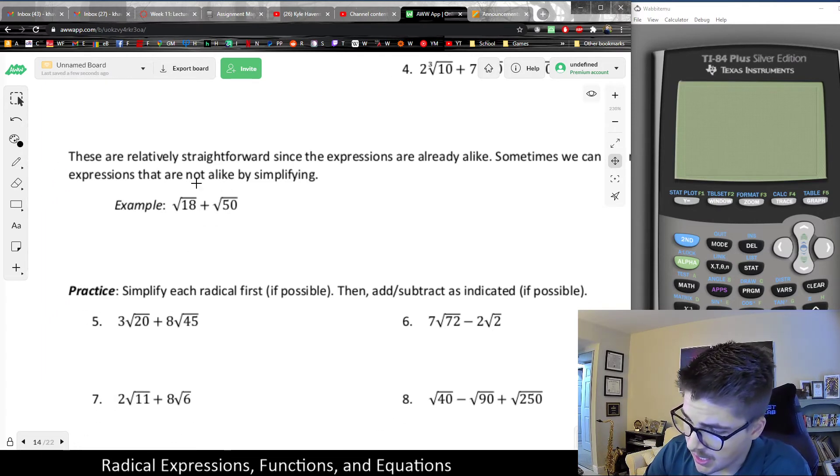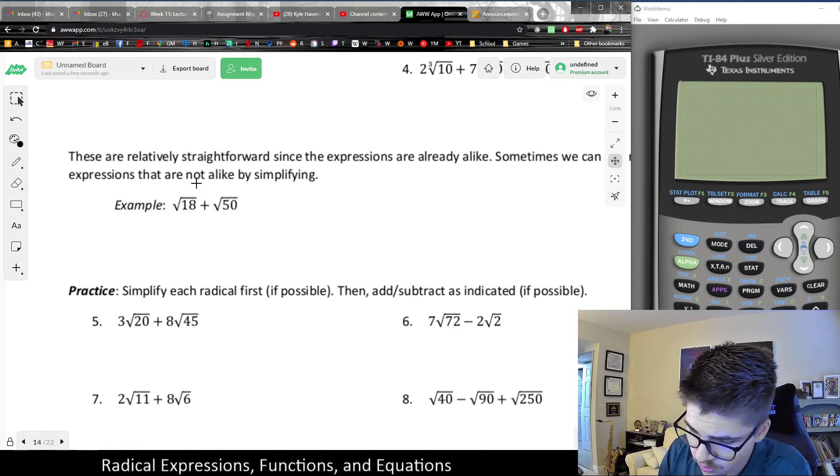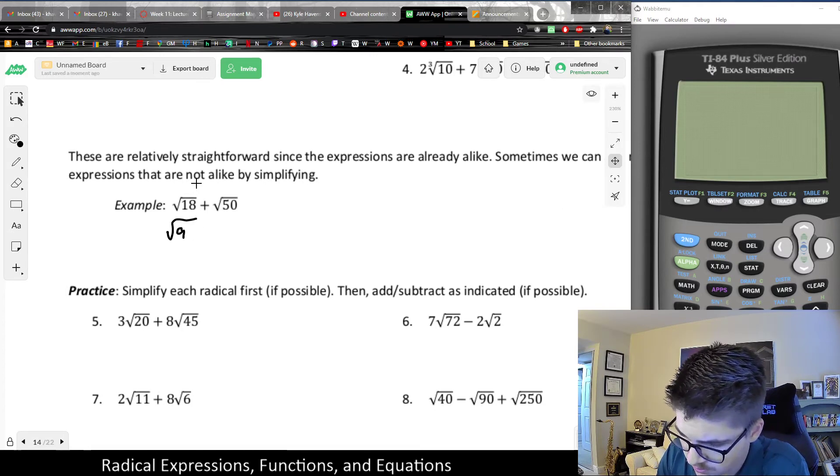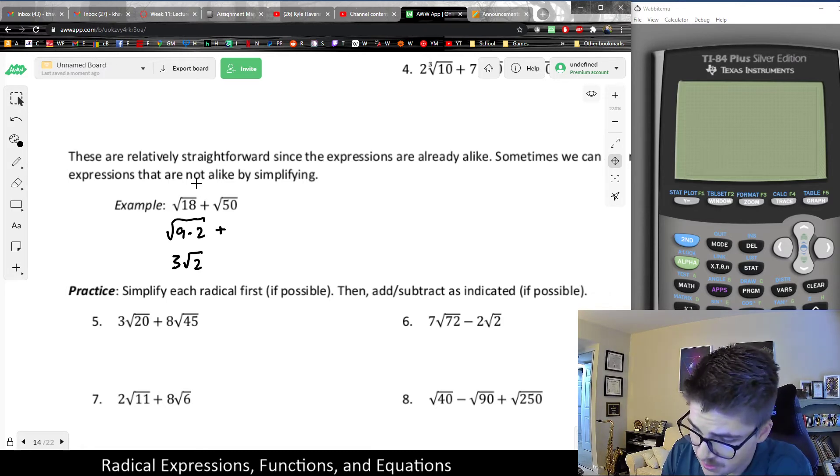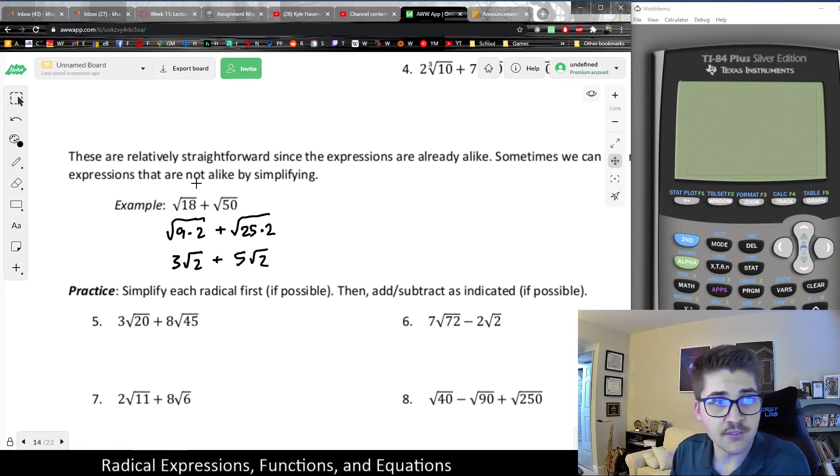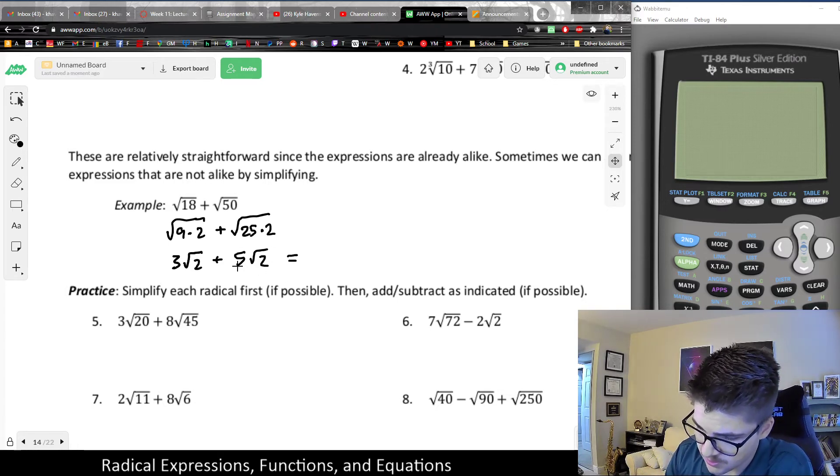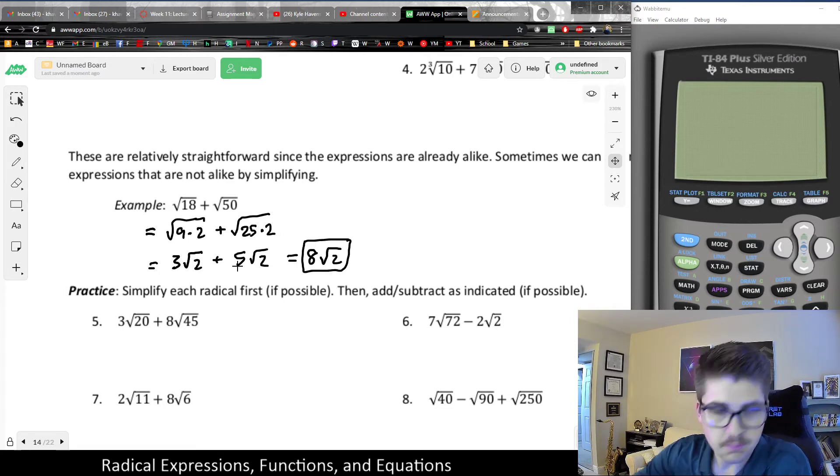Like for example, root 18, that simplifies because it's 9 times 2. So there, we could rewrite this as rad 9 rad 2. Or again, that would be 3 root 2. Similarly, with root 50, that's 25 times 2. So I could rewrite that expression as 5 root 2 based on simplifying. So my point is, if you simplify each component first, now notice that they actually are like radicals. And I can go ahead and add those together, leaving me with 8 root 2, the final sum of those radicals.